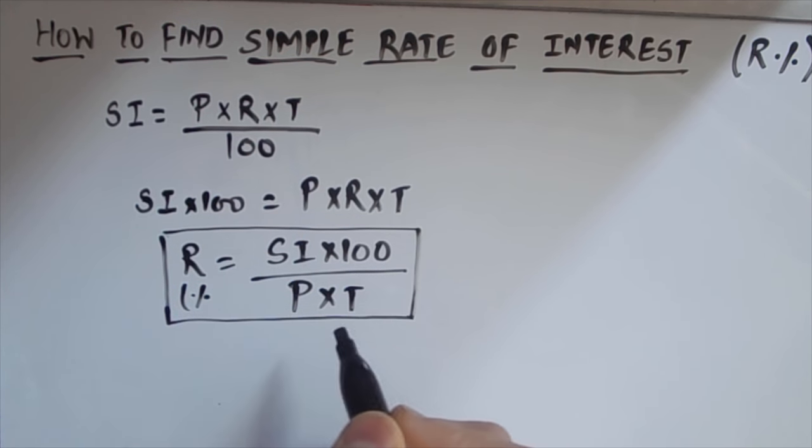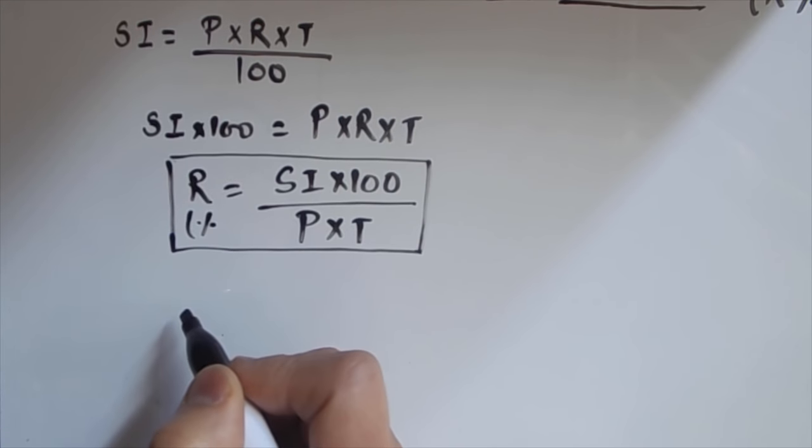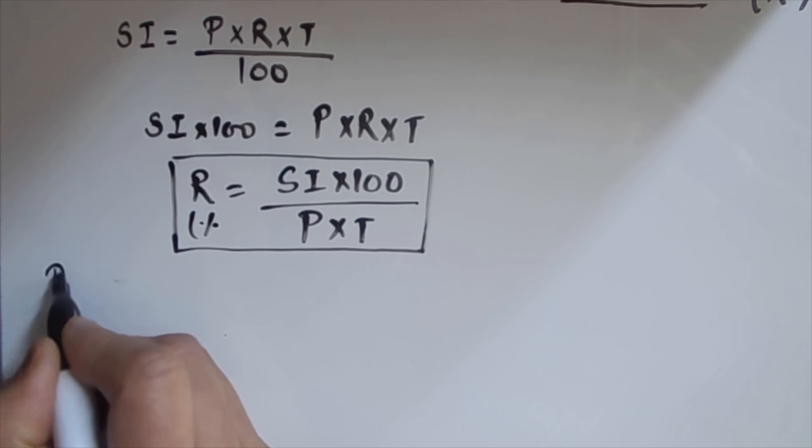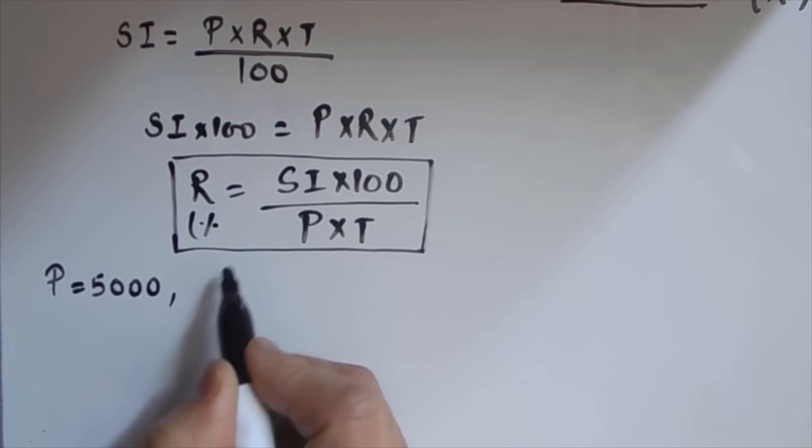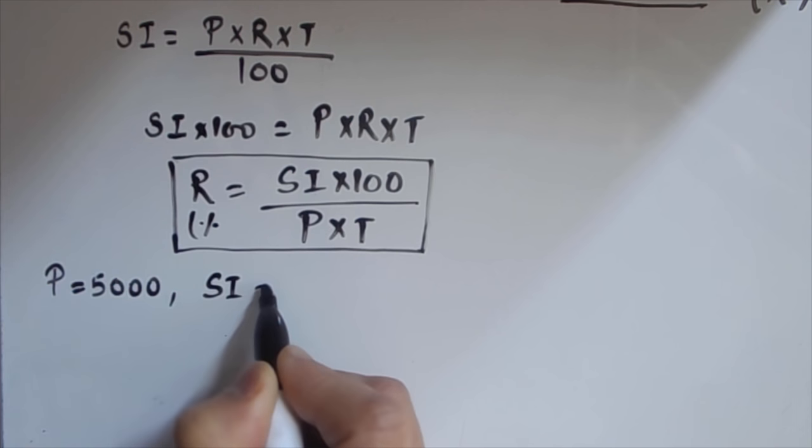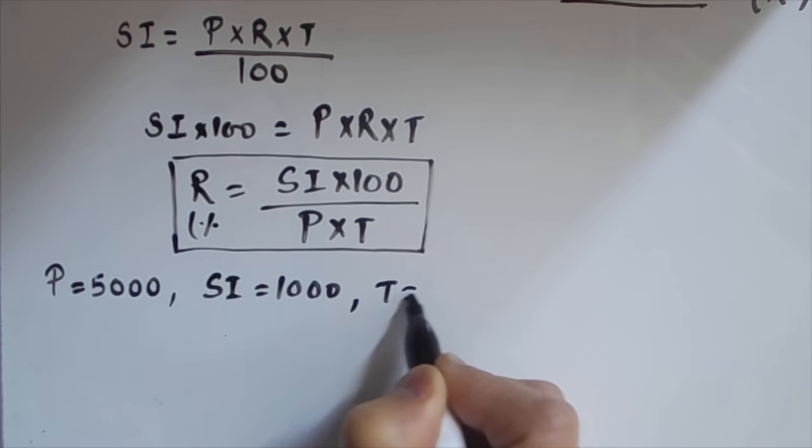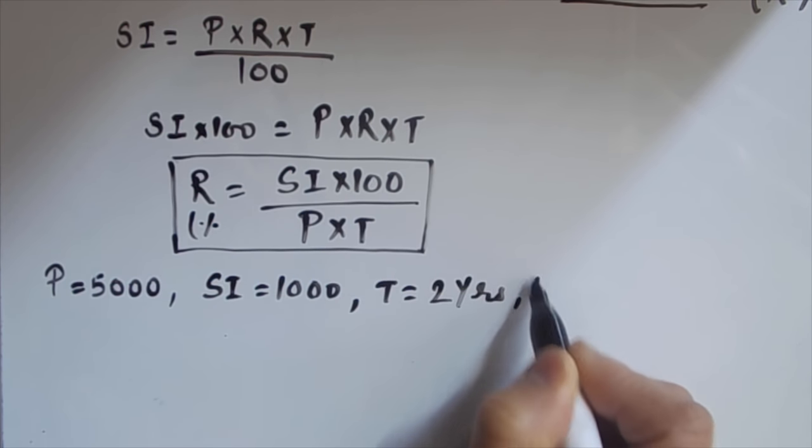Let's learn this or find this rate of interest with an example. Take a principal amount of 5000 from the bank and we are giving interest as 1000 rupees after a period of two years. Then we need to find what's the rate of interest